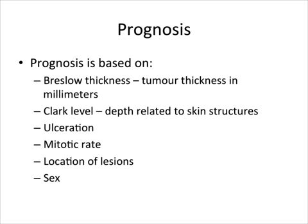There are several prognostic markers used to assess the prognosis of patients with melanomas. The thicker the Breslow thickness and the deeper the Clark level, the more likely metastases are present or going to develop. Other poor prognostic markers are the presence of ulceration, increased mitotic rates, pigmented lesions on the trunk, and males generally having a poorer prognosis than females.